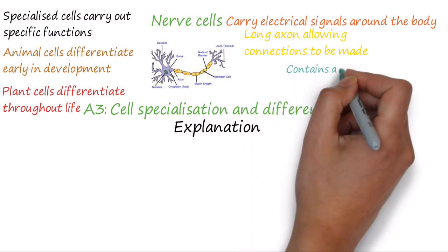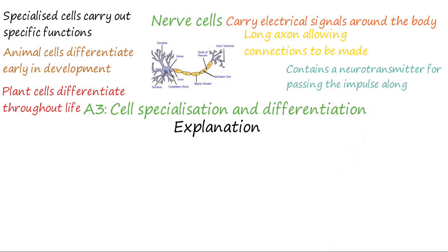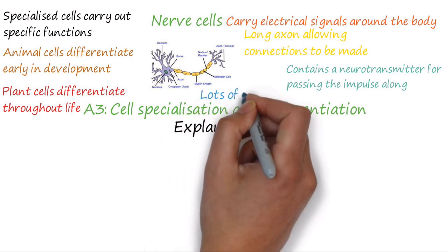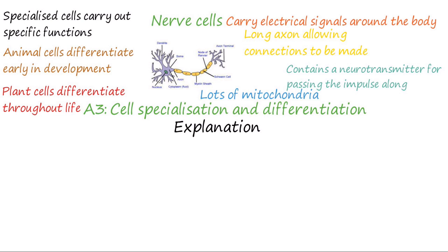In addition, the nerve ending or axon terminal contains neurotransmitter chemicals, which allow an impulse to be passed from the nerve cell to a muscle. The axon terminal also contains many mitochondria, providing the energy required to make these chemicals.